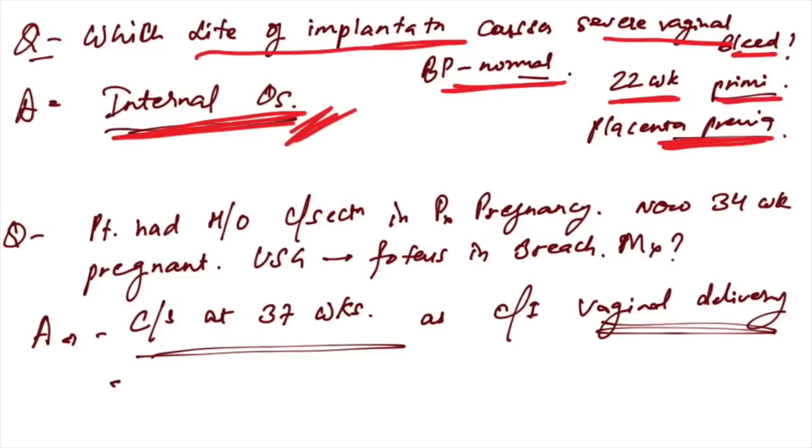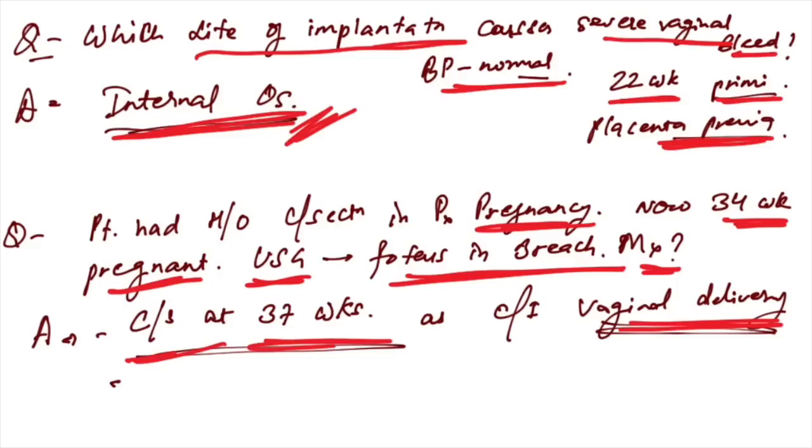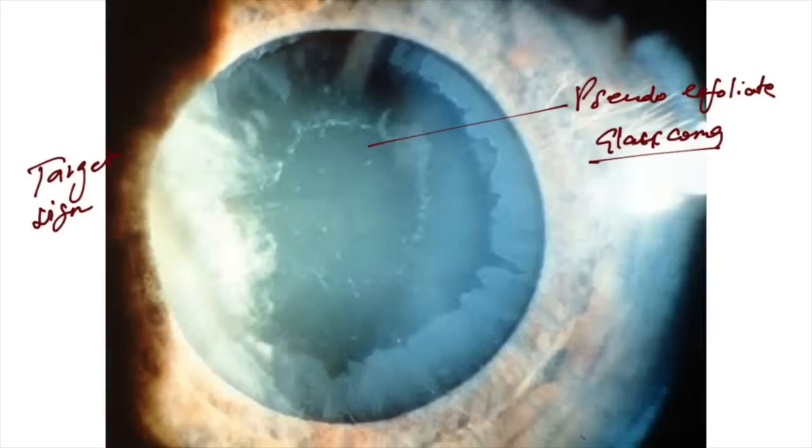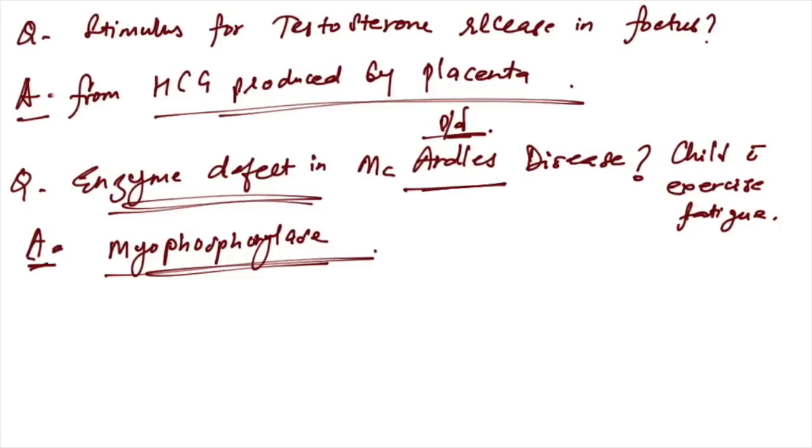Patient had history of C-section in previous pregnancy, now she is 34 weeks pregnant insisting on vaginal delivery. Ultrasound shows fetus in breech. What will be the management? C-section at 37 weeks. Vaginal delivery is contraindicated because of previous C-section. This image was given: you can appreciate the target sign seen in pseudoexfoliative glaucoma. Stimulus for testosterone release in fetus is due to hCG produced by the placenta.